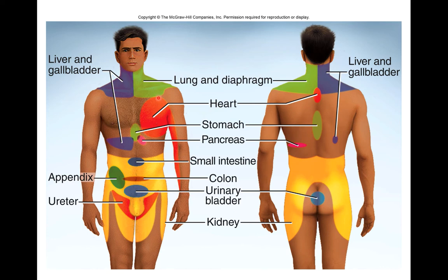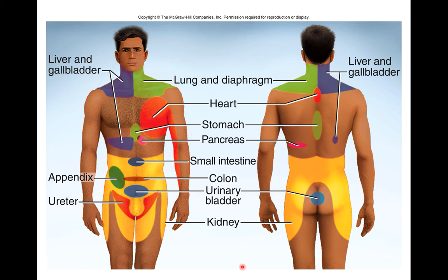Everything in red on the diagram is sensed together. If you go to a doctor and say your upper right neck is hurting, a doctor who knows about referred pain will also consider your liver and gallbladder region as a possible source. Pain doesn't always come from where you think it's coming from.